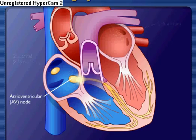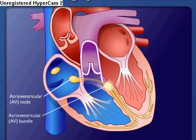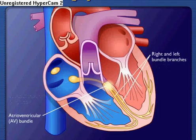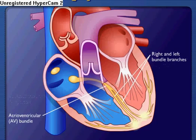They then pass rapidly along the atrioventricular bundle, which extends from the atrioventricular node through the fibrous skeleton into the interventricular septum. The atrioventricular bundle divides into right and left bundle branches, and action potentials descend rapidly to the apex of each ventricle along the bundle branches.